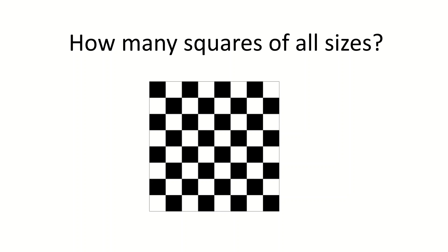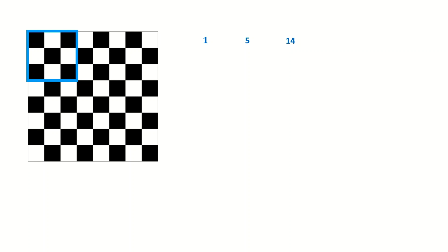Now let's get back to the original problem and use this method to find how many squares of all different sizes are in a chessboard. Start by generating the sequence of answers. For a 1 by 1 chessboard, you just have 1 square. For a 2 by 2 chessboard, you have 5 squares — 4 small ones and 1 big 2 by 2. A 3 by 3 chessboard has 14 squares: 9 small 1 by 1, 4 that are 2 by 2, and 1 that is 3 by 3. For a 4 by 4 you have 30 squares, and for a 5 by 5 you have 55, and so on. This is the sequence, and you want to find the formula for it.